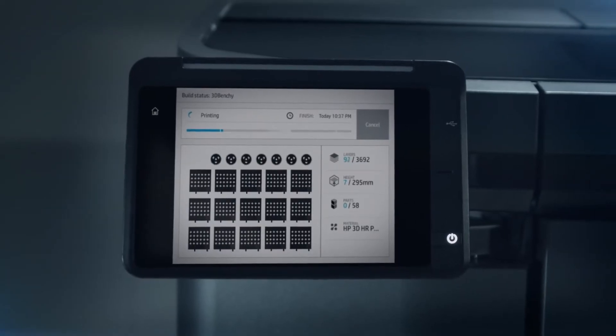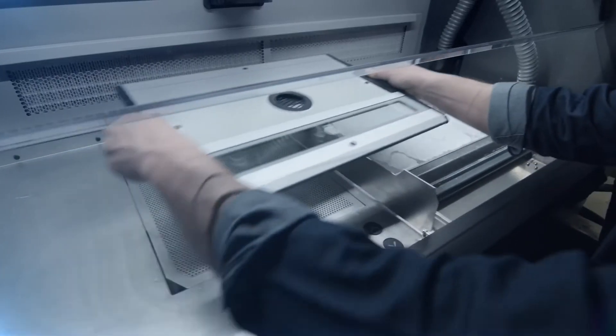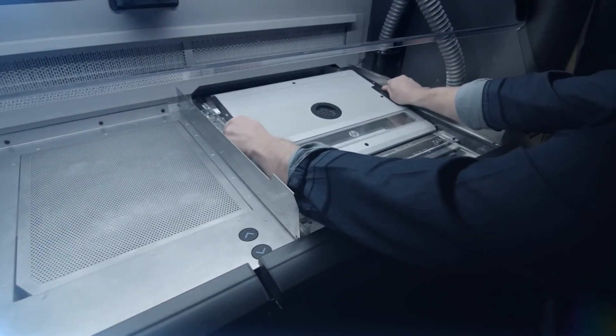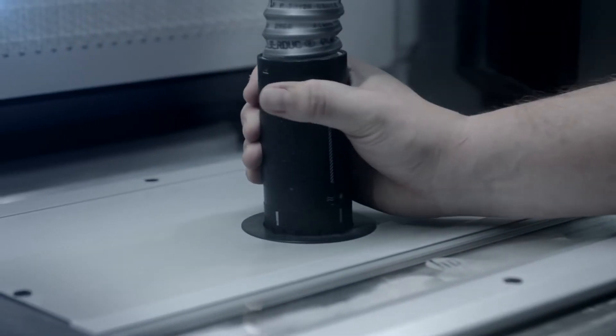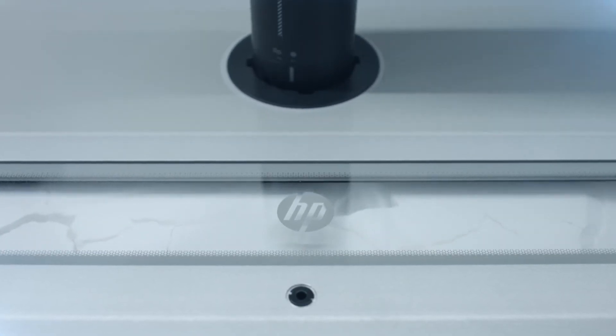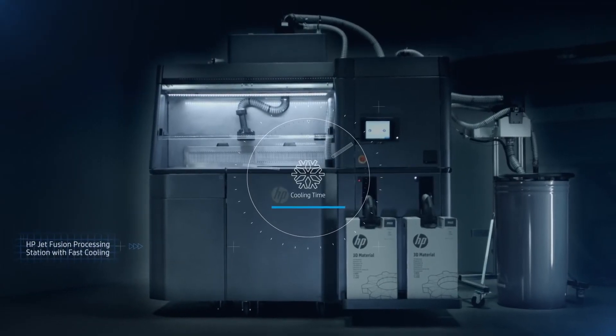The HP JetFusion 3D processing station allows for cooling, unpacking and mixing, via a semi-automatic process, which helps reduce labor costs. Fast cooling speeds up the post-print process, and the powder is contained entirely within the processing unit, ensuring cleaner unpacking and materials reuse and mixing.